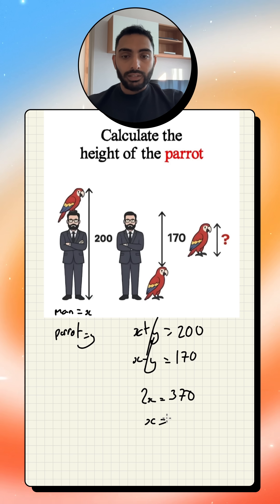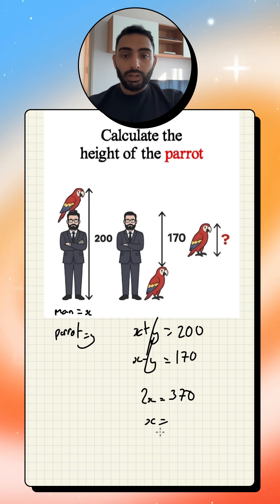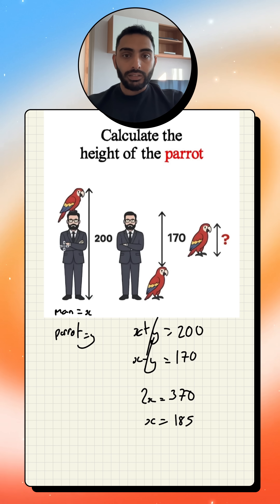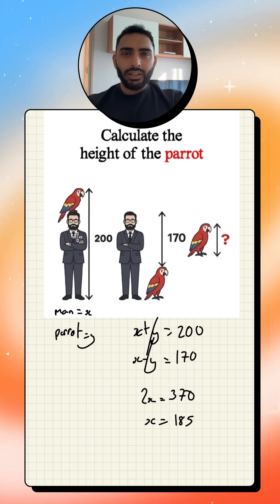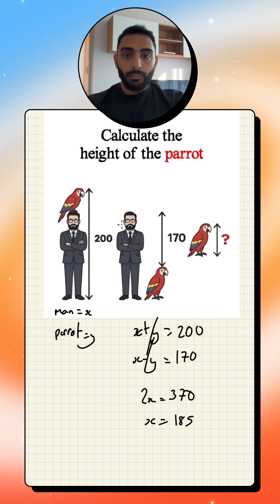I can figure out what X is now by dividing by 2 on both sides. 370 divided by 2 is 185. So the man is 185 — I think it's centimeters, we're going to assume it's centimeters — 185 centimeters tall.